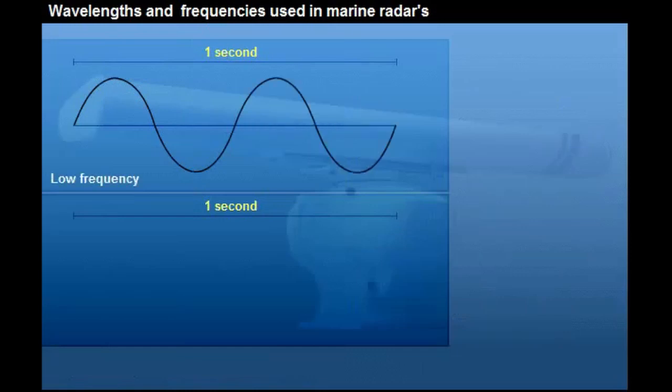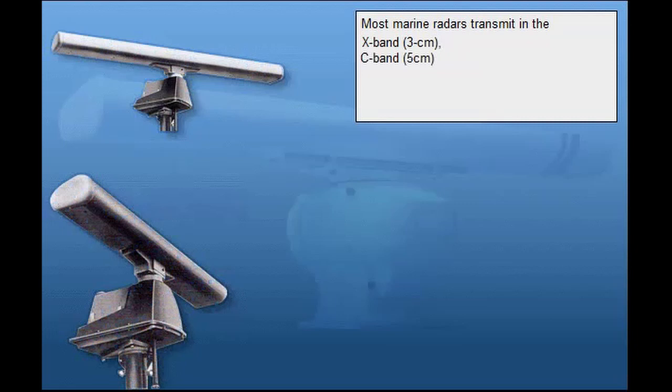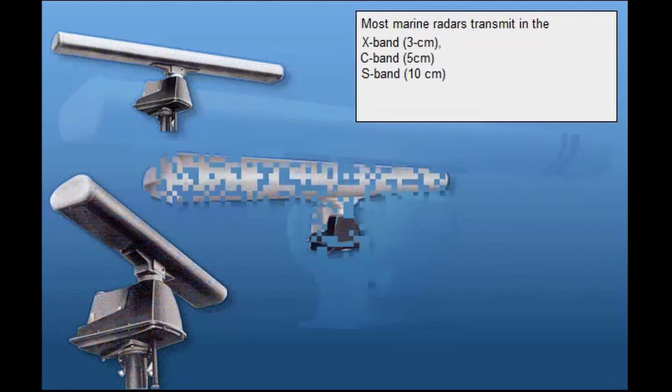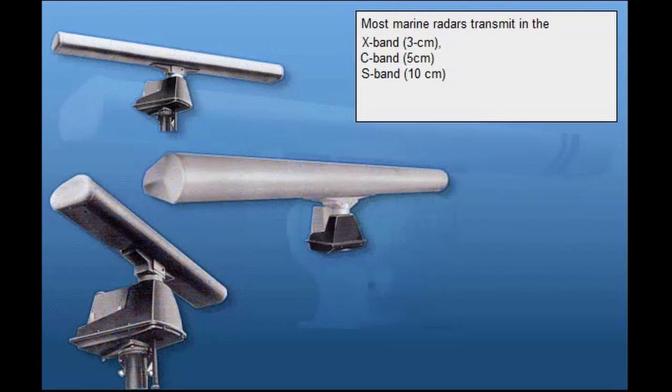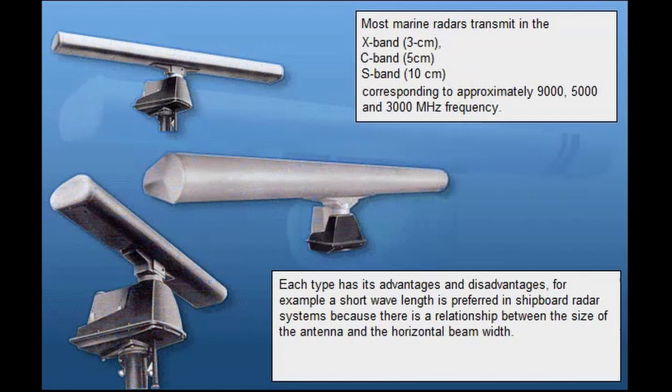If, on the other hand, the wavelength is short, more crests will pass the fixed point per second and the frequency will be higher. Most marine radars transmit in the X band, 3 cm, C band, 5 cm, S band, 10 cm, corresponding to approximately 9000, 5000 and 3000 megahertz frequency. Each type has its advantages and disadvantages.